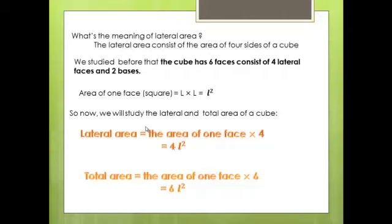The lateral area equals the area of one face multiplied by four, giving us 4L squared. The total area equals the area of one face multiplied by six, giving us 6L squared. So: lateral area = 4L², and total area = 6L².